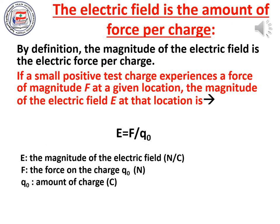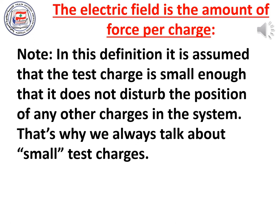You have just seen the connection between the direction of the electric field and the direction of the electric force. How do you determine the magnitude of the electric field? By definition, the magnitude of the electric field is the electric force per charge. If a small positive charge experiences a force of magnitude F at a given location, then E = F / Q0. E is measured in newtons per coulomb, F is the force in newtons, and Q0 is the charge in coulombs. We use small test charges so our calculations are more accurate.